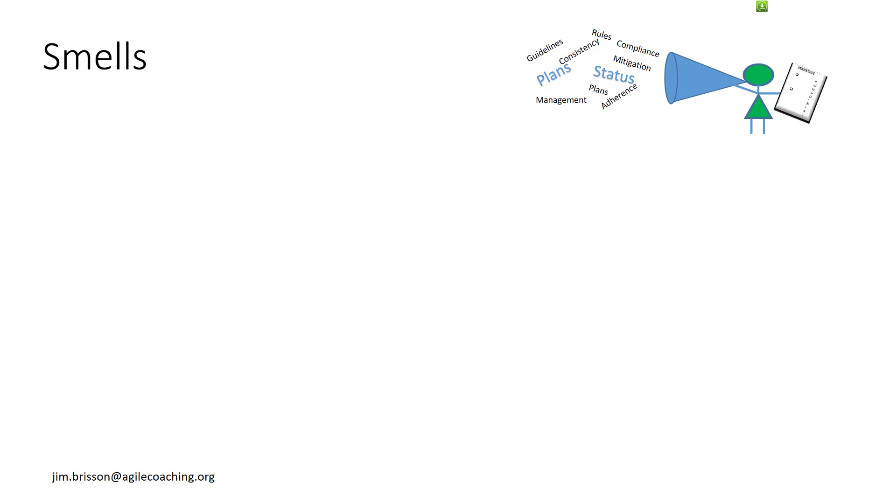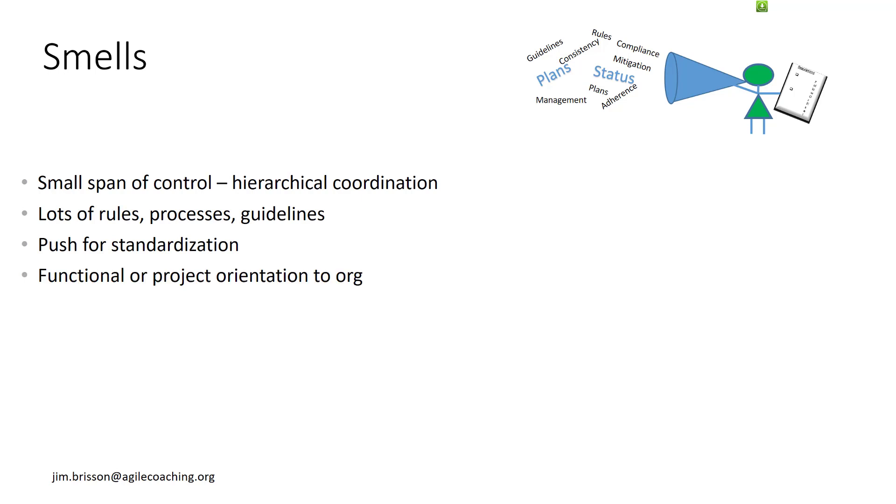So turning all that I just talked about around, what are some smells that should concern you? Well, a small span of control, because that's going to yield tighter hierarchical control. Lots of rules, processes, and guidelines, obviously. That indicates less autonomy. A push for standardization, again, indicates low autonomy. Functional or project teams, that's just going in the wrong direction of organization. Centralized power is wrong. We want empowered teams. If you see project managers and PMOs, that means that extra management seems to be needed. So our organizational structure is not doing us any favors. We have too much communication outside of Dunbar's number and so on. When we see low morale and low motivation, then teams are lacking autonomy and clear goals leading to lower morale.